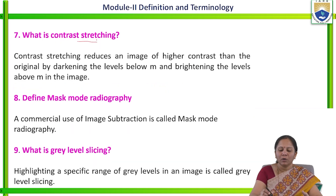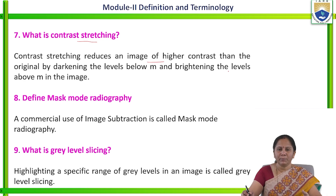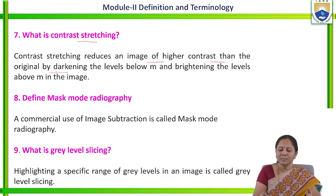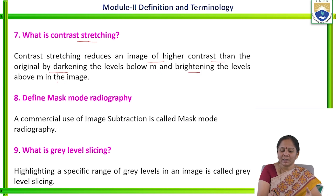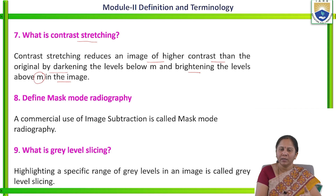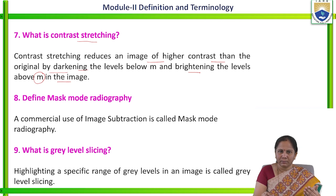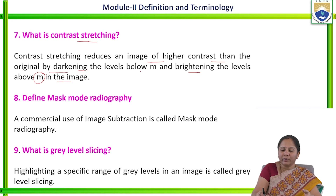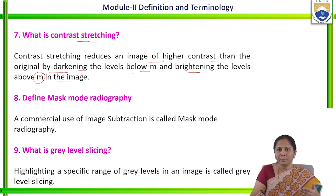What is contrast stretching? Contrast stretching produces an image of higher contrast than the original by darkening the levels below M and brightening the levels above M in the image. Here M represents the threshold value. Based on M, whatever pixel values are below M will be represented as dark, and if the values are above M, that pixel's contrast value will be represented as bright.